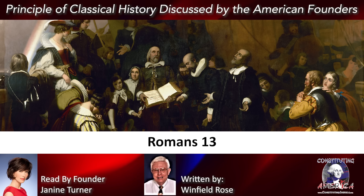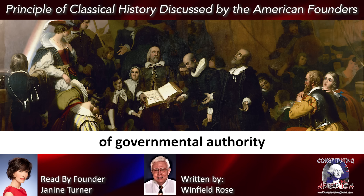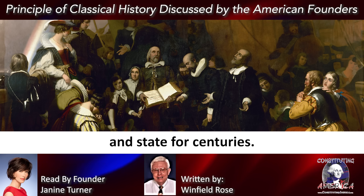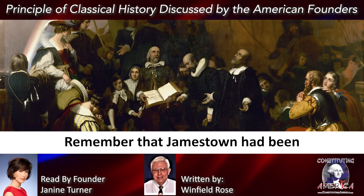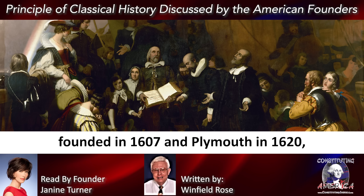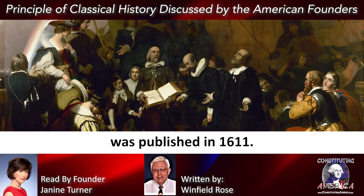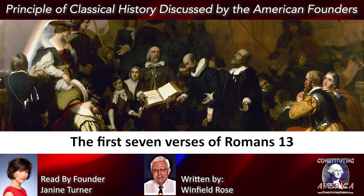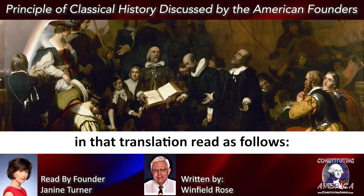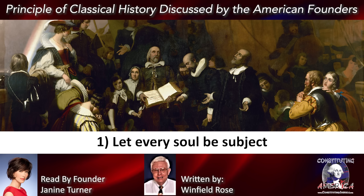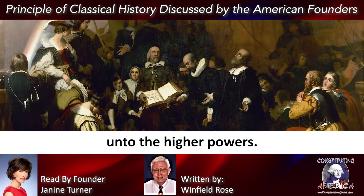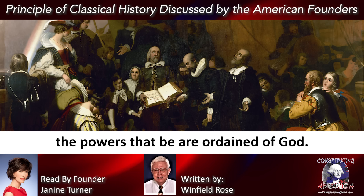Romans 13 had been the basis of governmental authority in both the church and state for centuries. Remember that Jamestown had been founded in 1607 and Plymouth in 1620, and that the King James translation of the Bible was published in 1611. The first seven verses of Romans 13 in that translation read as follows: 1. Let every soul be subject unto the higher powers, for there is no power but of God. The powers that be are ordained of God.